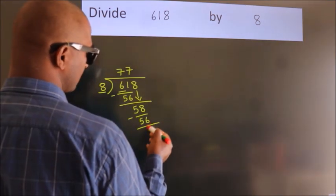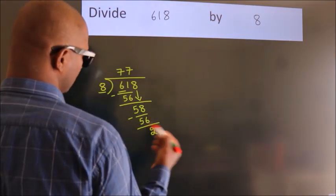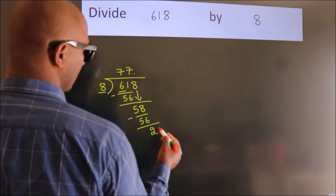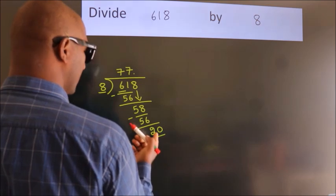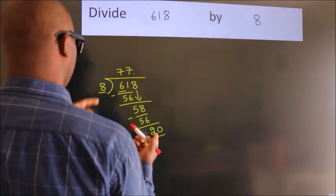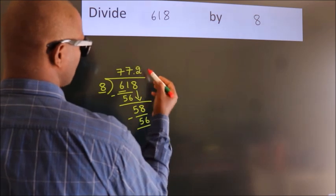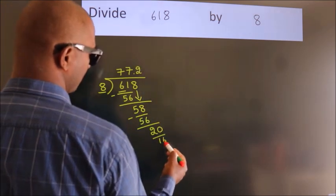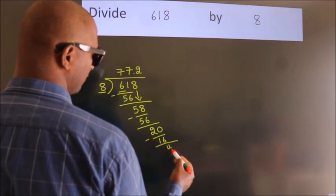After this, no more numbers to bring it down. So what we do is we put a dot and take 0. So 20. A number close to 20 in the 8 table is 8 times 2 is 16. Now we subtract. We get 4.